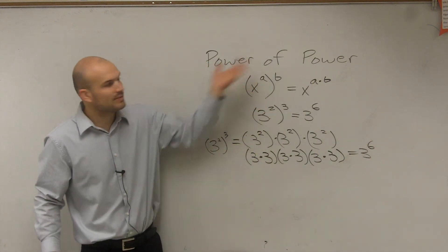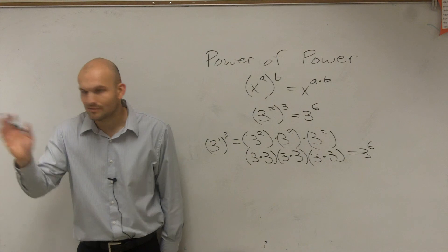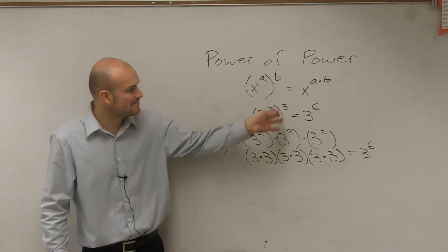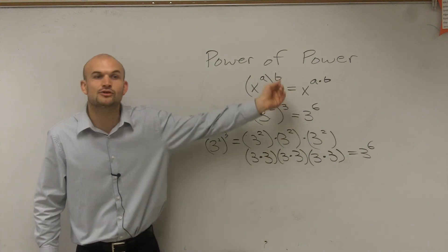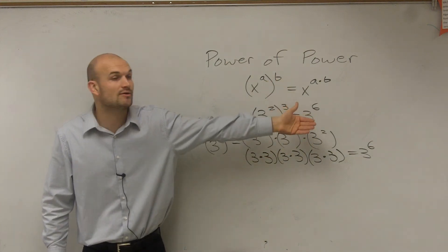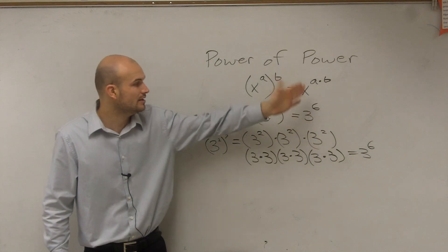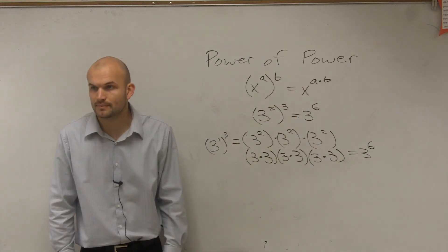So by applying the power of a power rule, you just need to make sure that when you take an exponent and you raise it to another exponent — a power to another power — you're going to multiply them.